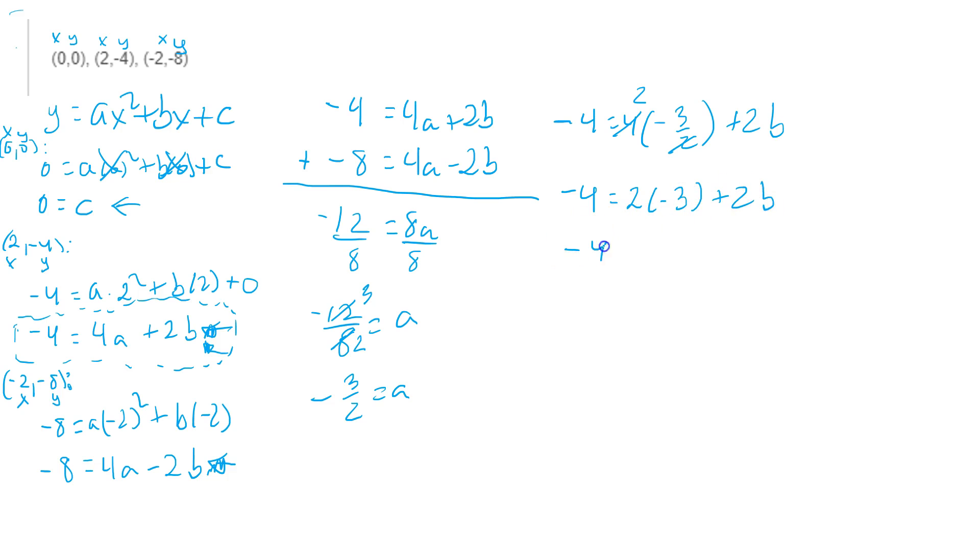Then continue. -4 equals here -6 plus 2b. 2 times -3 is -6. Add 6 to both sides. When you carry that out, it's going to give you here that -4 plus 6 is 2.